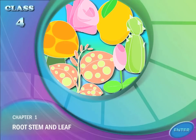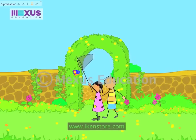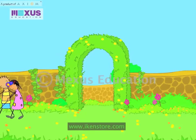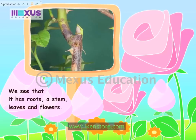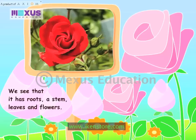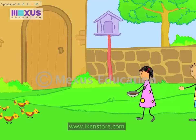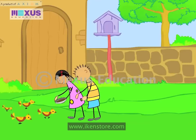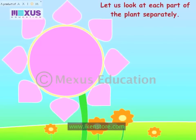Root, Stem and Leaf. Everyone has seen a plant. We see that it has roots, a stem, leaves and flowers. Have you ever thought of the functions of the various parts of a plant? Let us look at each part of the plant separately.